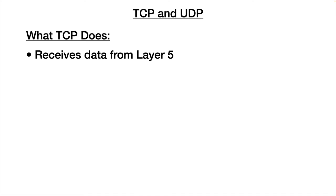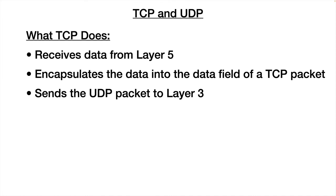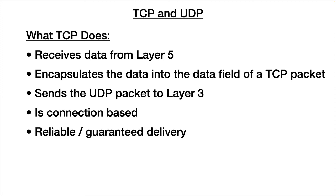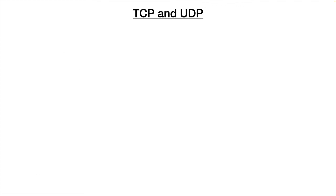What does TCP do? It receives data from layer 5, encapsulates it into the data field of a TCP packet, and sends that TCP packet to layer 3. It is connection-based, so it does establish a connection that it keeps open during the communications. It has reliable, guaranteed delivery. There is a mechanism using acknowledgements of data transmission and timers to make sure that all packets are transmitted, and it does manage the flow of data — guaranteed in-order delivery of packets.